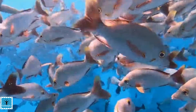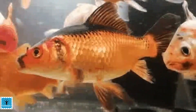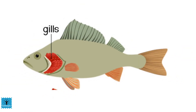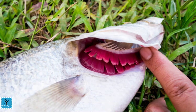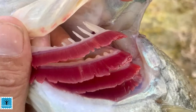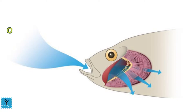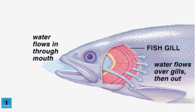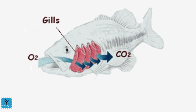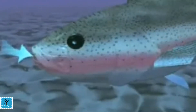For organisms that live in water, respiration in fish takes place with the help of gills. Gills are present on either side of the head and are made up of a feathery structure called gill filaments, which provide a large surface area for gas exchange. Fish take in oxygen-rich water through their mouth and pump it over the gills. Blood in the capillaries takes up dissolved oxygen, and carbon dioxide is eliminated through the gills.